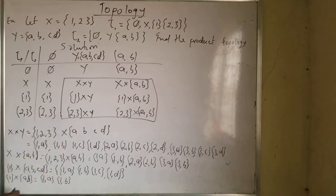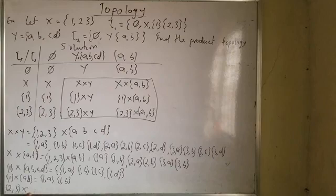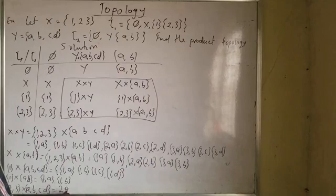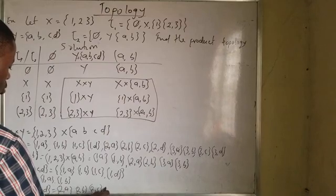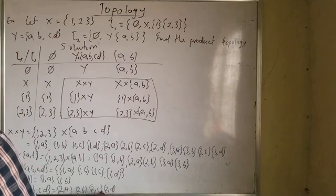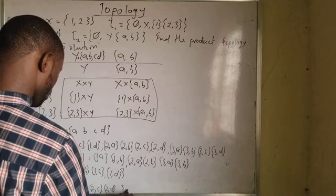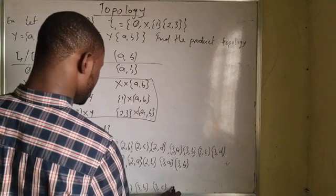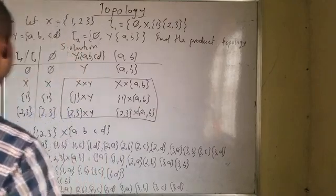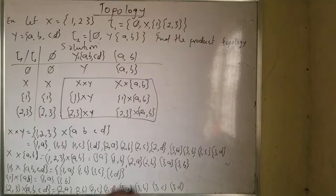Moving on to the next: {2, 3} × Y, where Y = {a, b, c, d}, gives: 2a, 2b, 2c, 2d, and 3a, 3b, 3c, 3d. Then {2, 3} × {a, b} gives: 2a, 2b, and 3a, 3b.